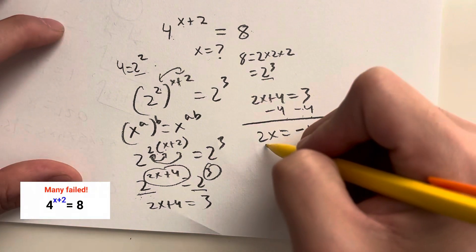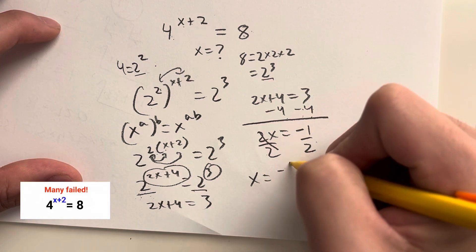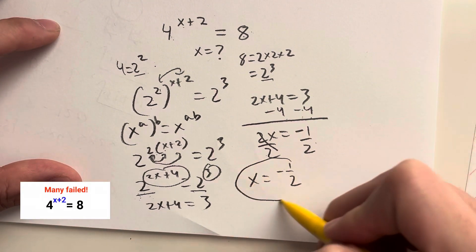Then I can divide both sides by 2, crosses out, x is equal to negative 1 over 2. And that right there is my answer.